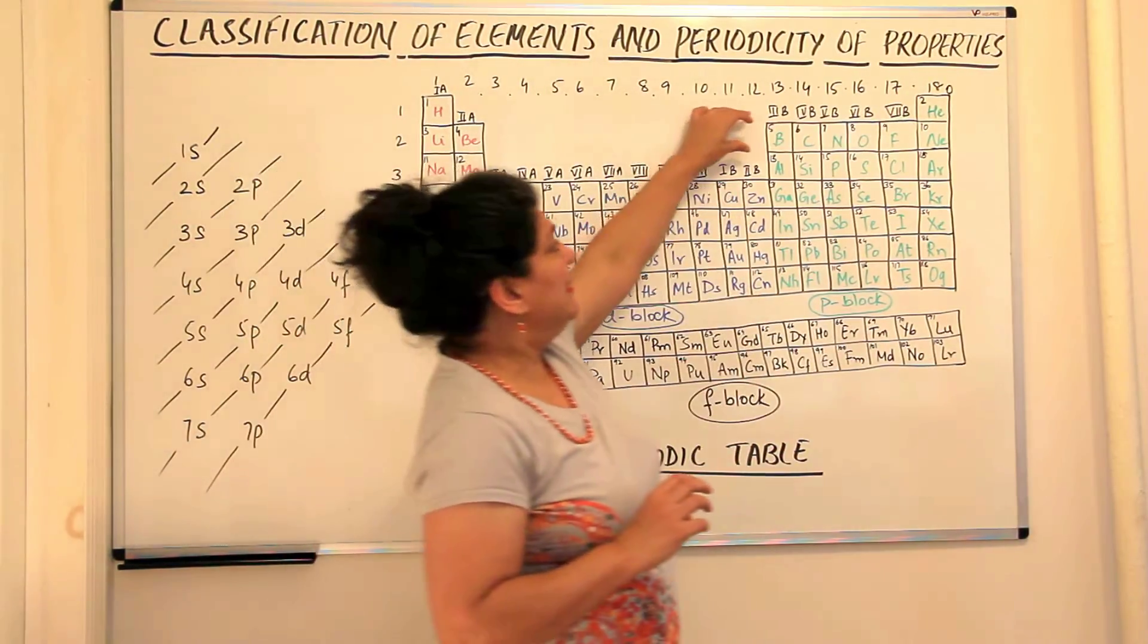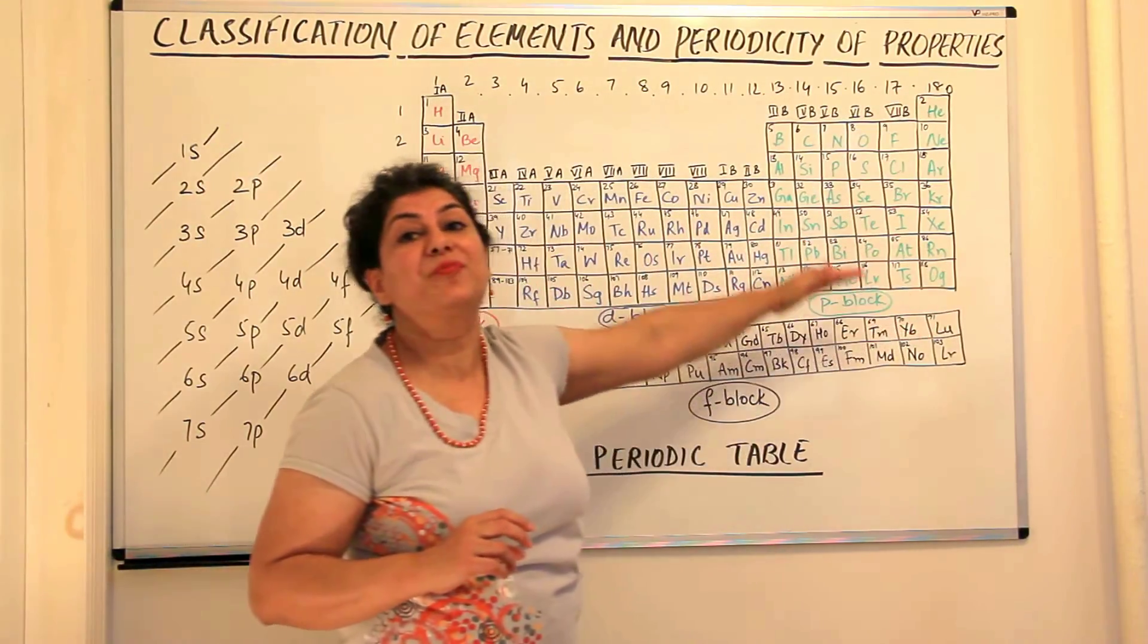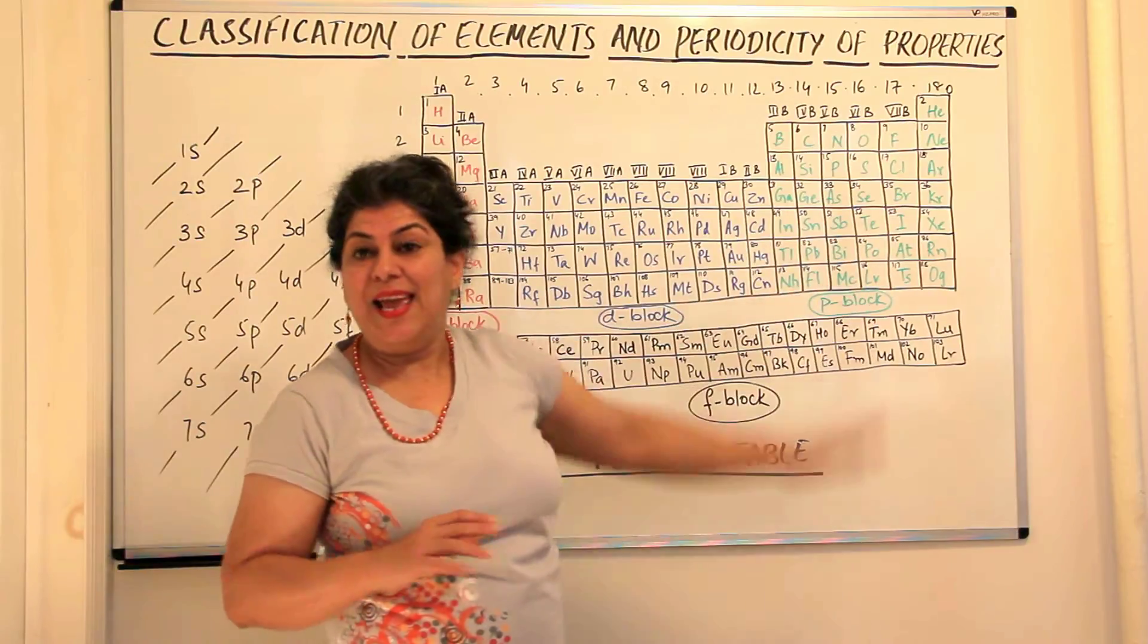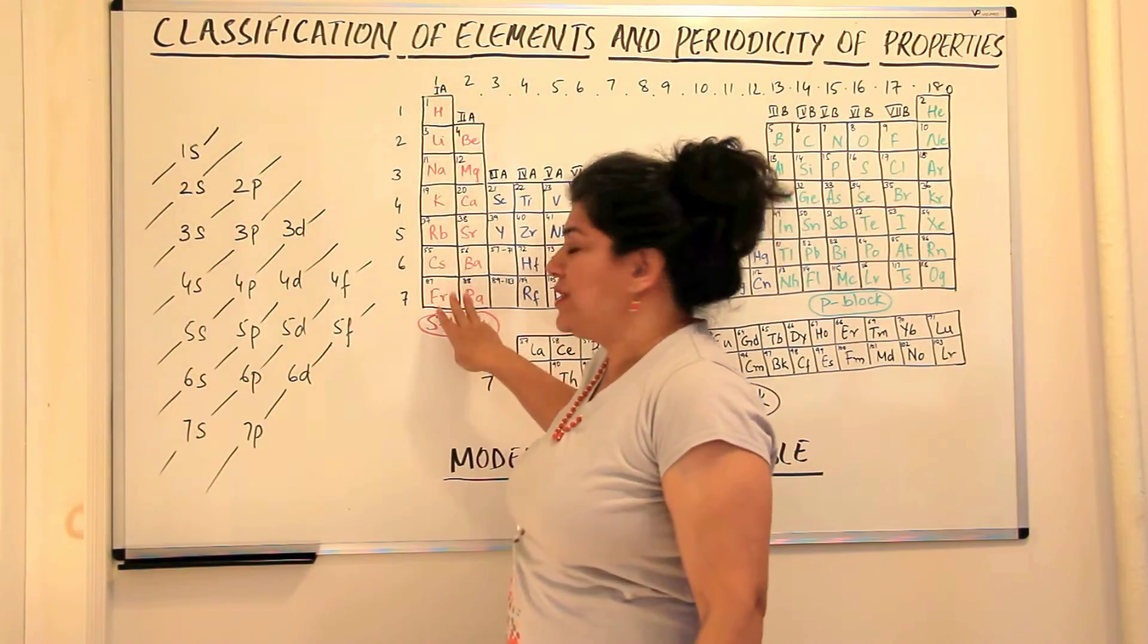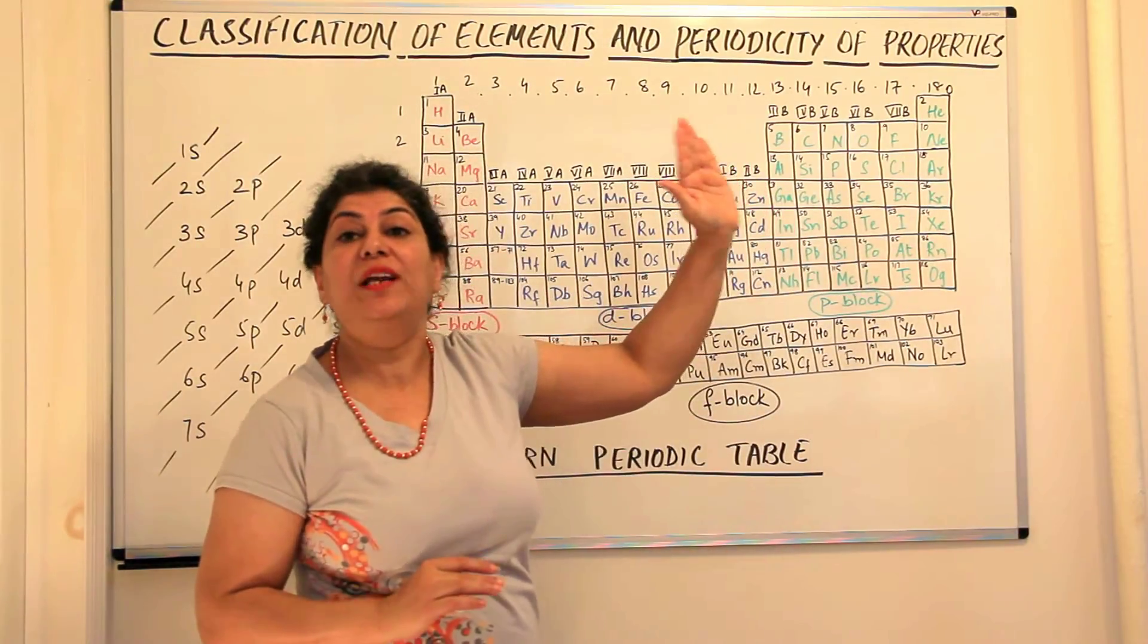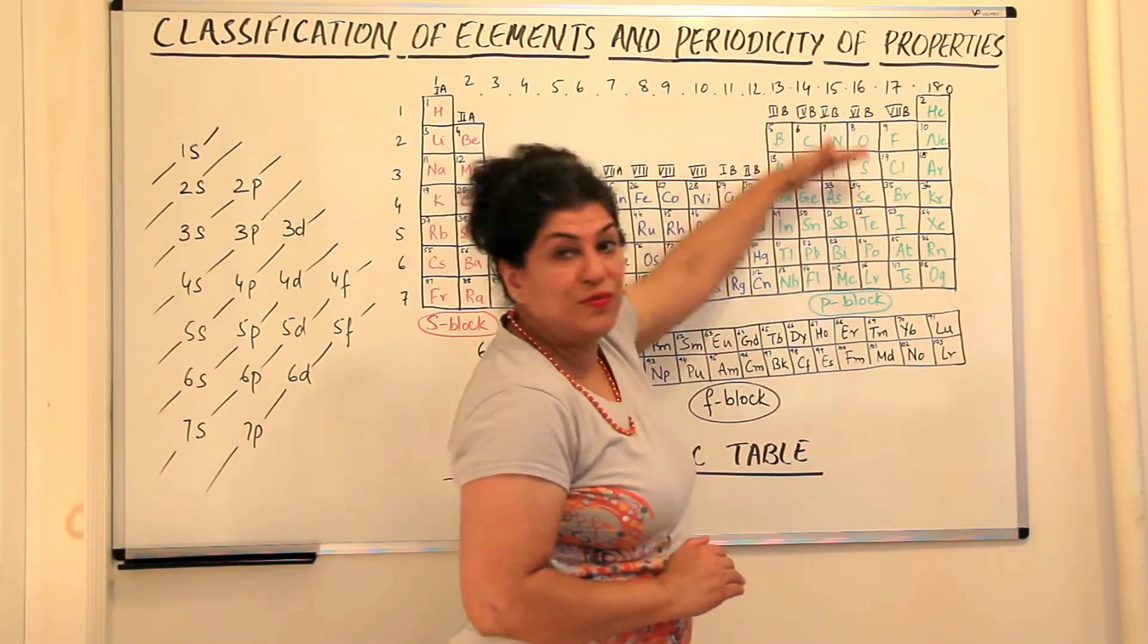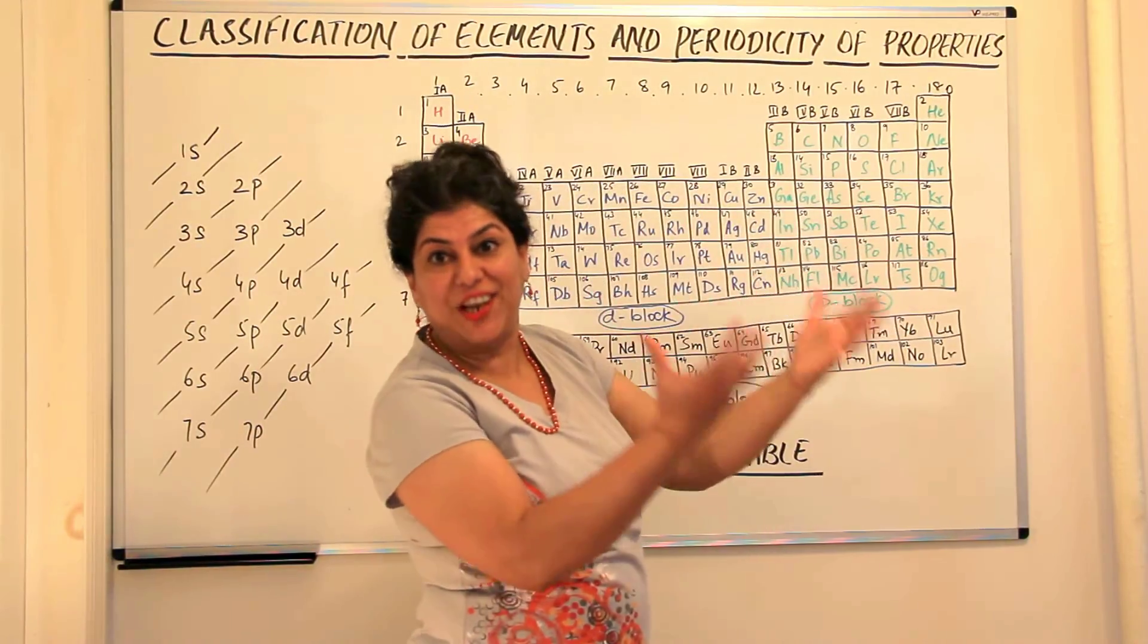So we notice that these six groups are actually the p orbitals being filled up. These two were the s orbitals being filled up and then these six are the ones where the p orbitals of that particular shell are being filled up. And the same pattern follows as you go down, only the shell changes.